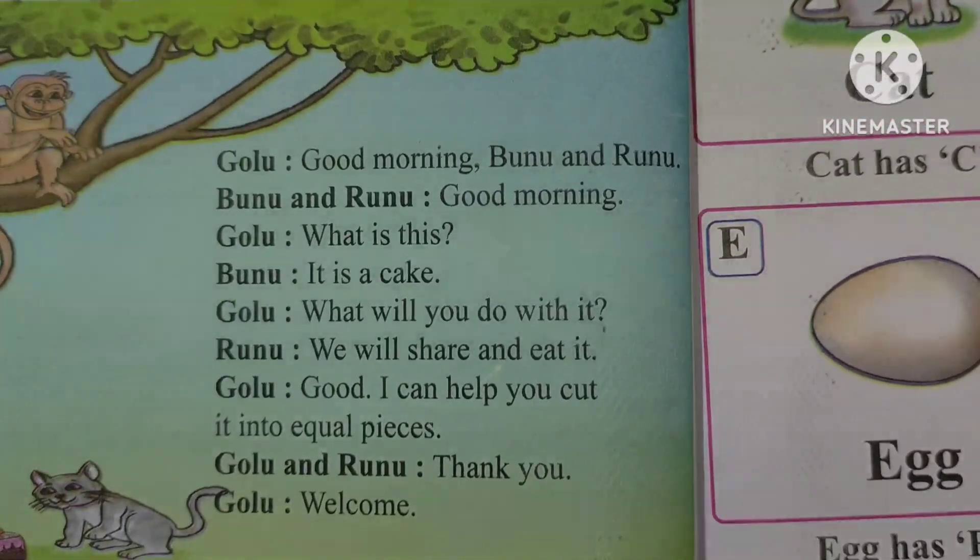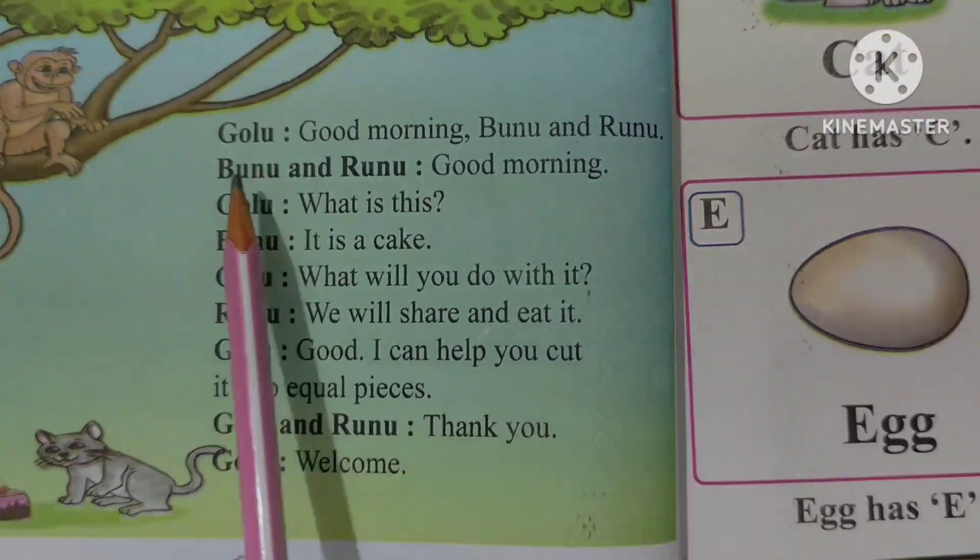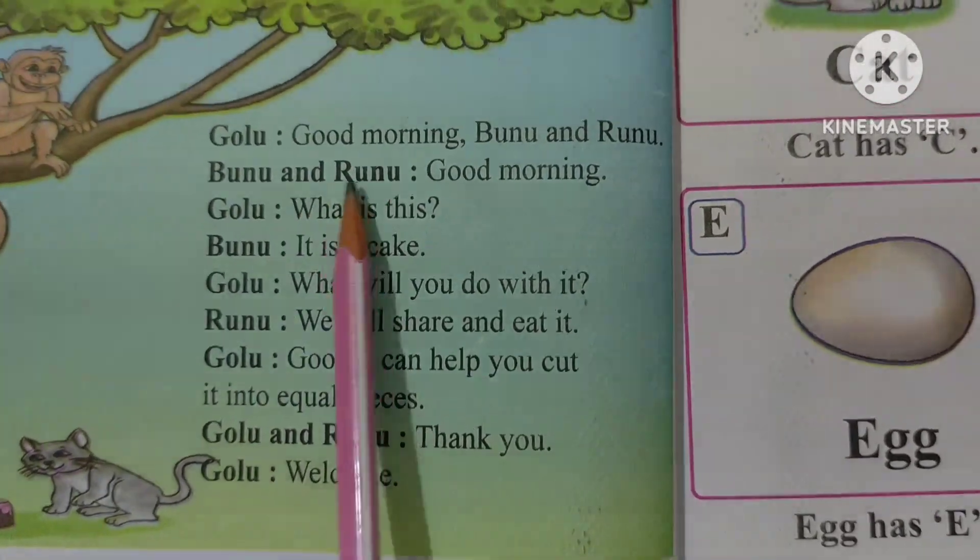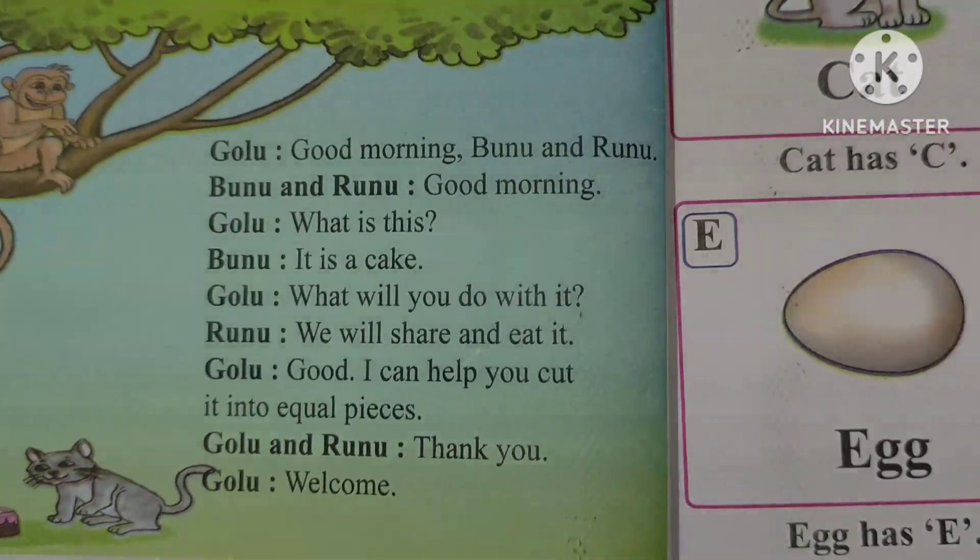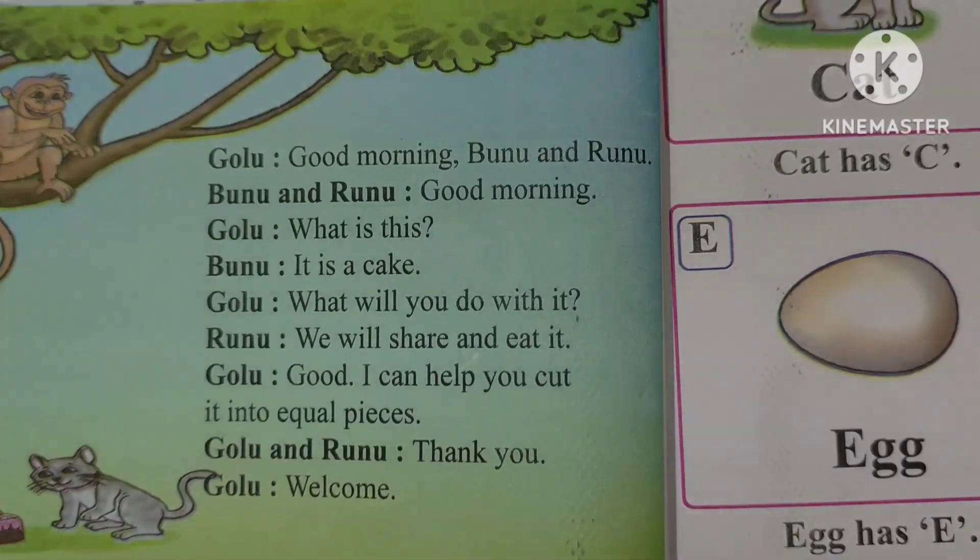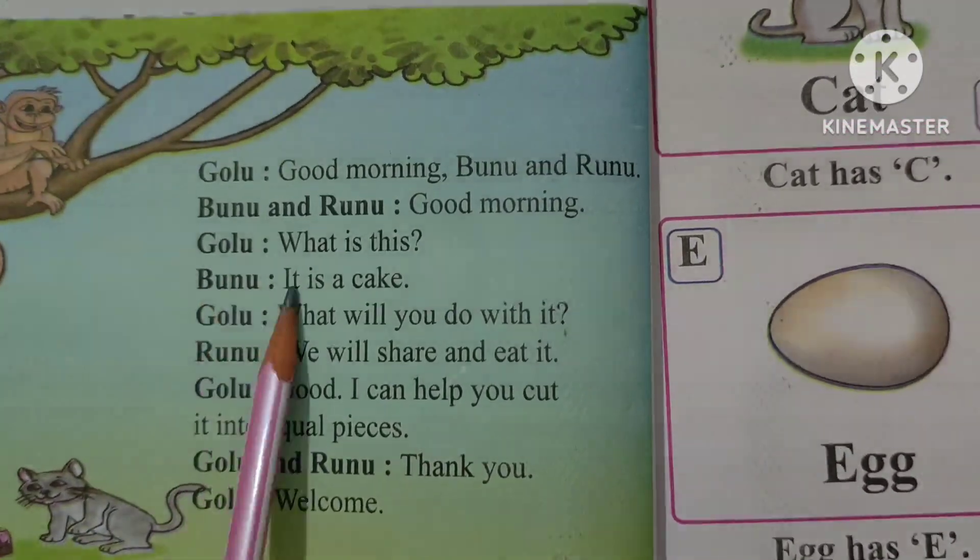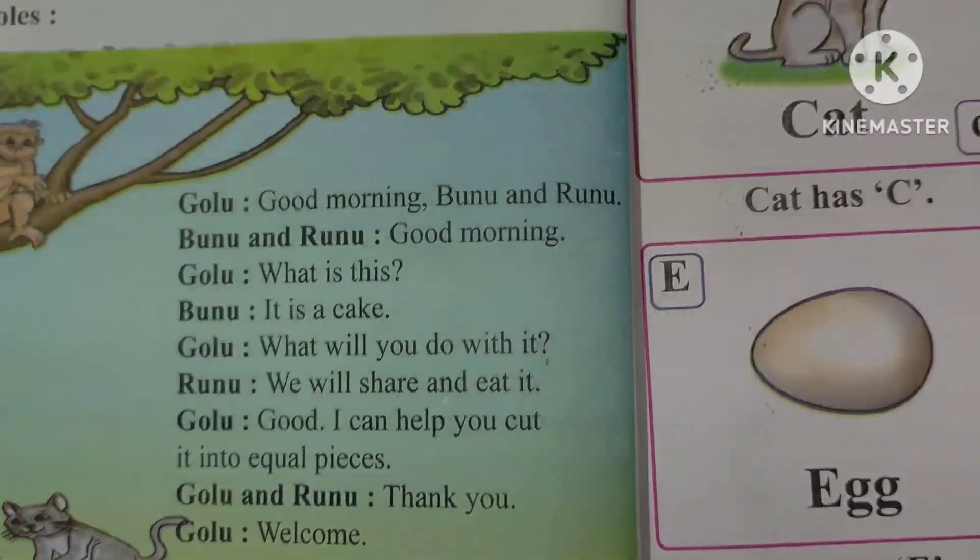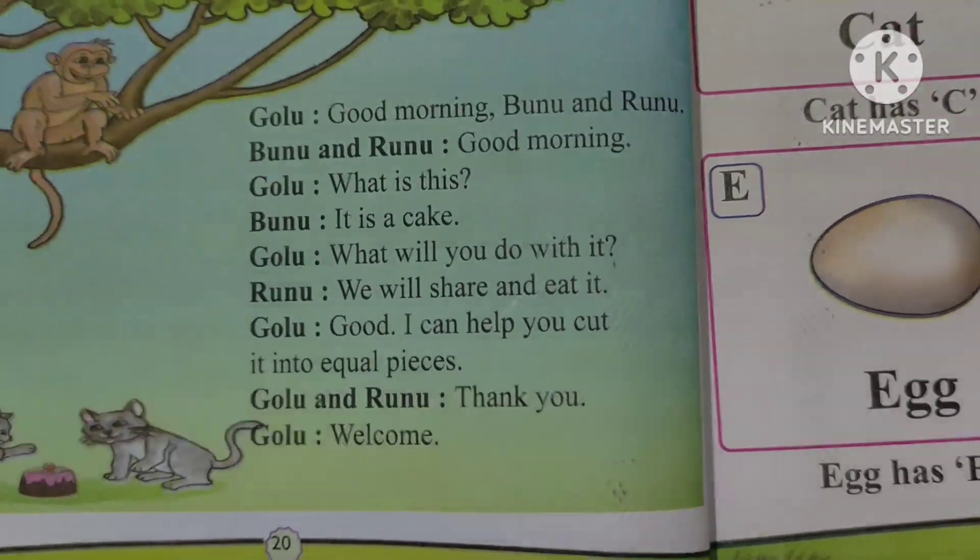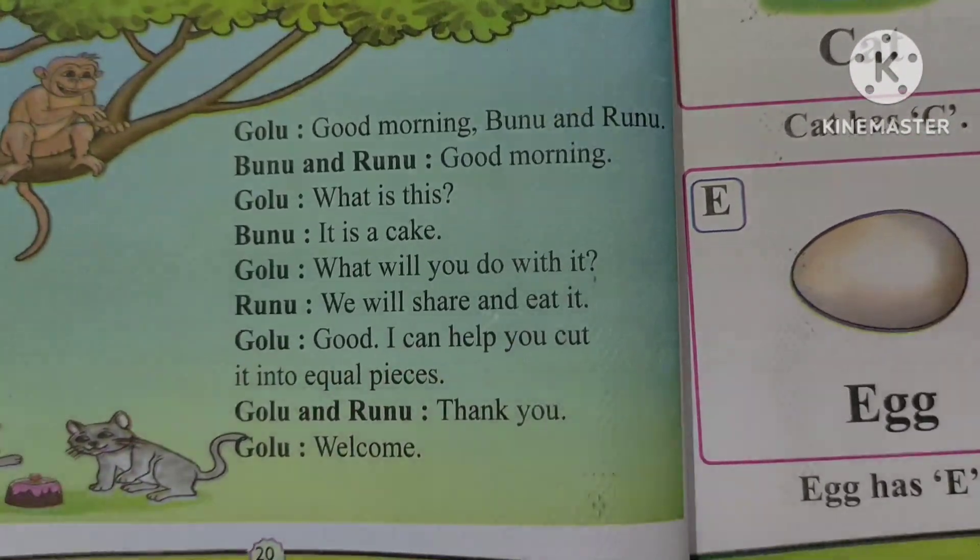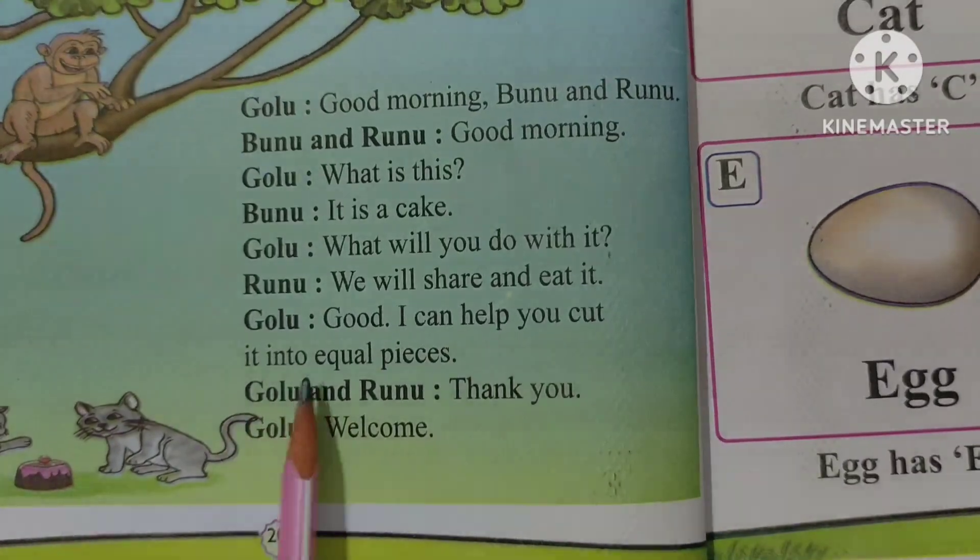My children, let's play roles. If you want to understand the rules, then you can say, Good morning. And he says, Good morning. The roles are, what is this? This is, he says, It is a cake. What will you do with it? We will share and eat it. I can help you cut it into pieces.